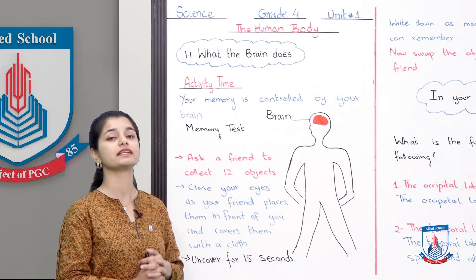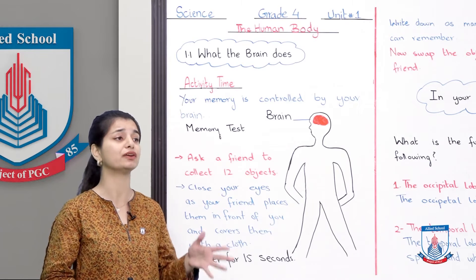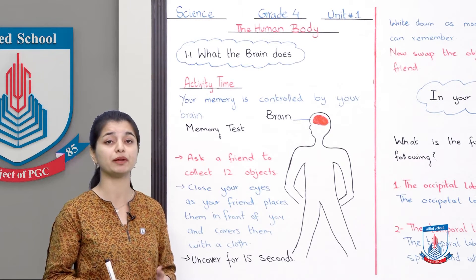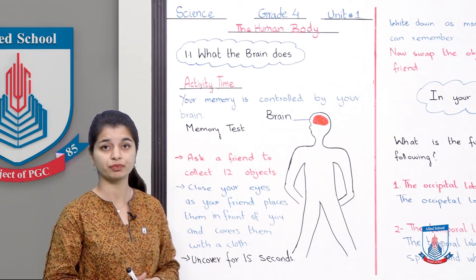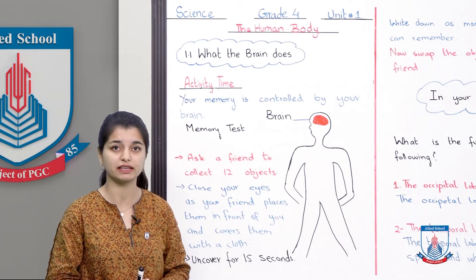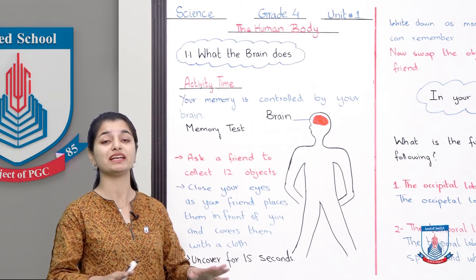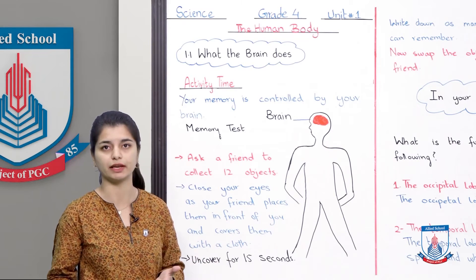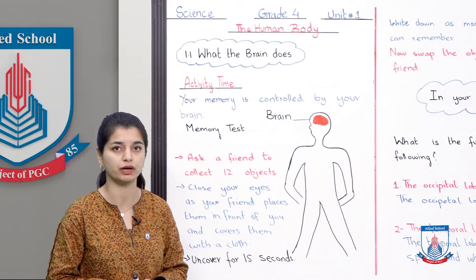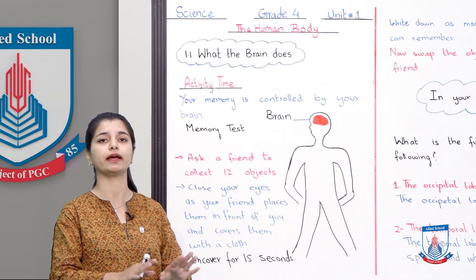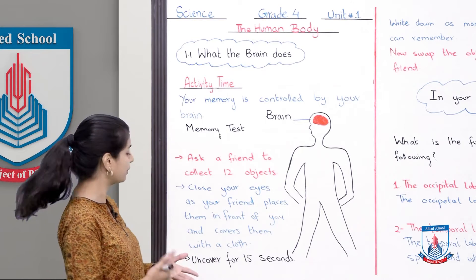Ask a friend to collect 12 objects - any objects like a calculator, scale, rubber, sharpener, anything. Close your eyes as your friend places them in front of you and covers them with a cloth. Your friend will collect 12 objects, place them in front of you, and cover them. You won't see when they place the objects. Just let your friend place them however they want, cover them, and you wait on the side.